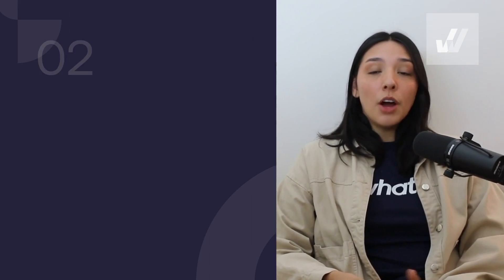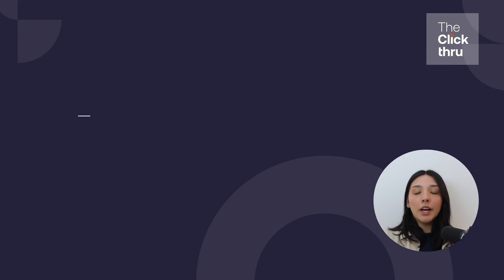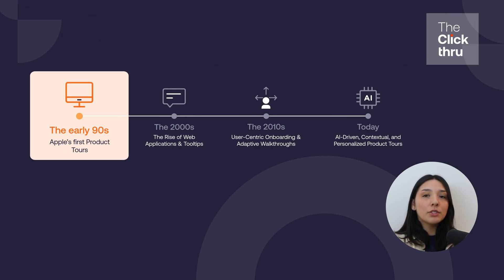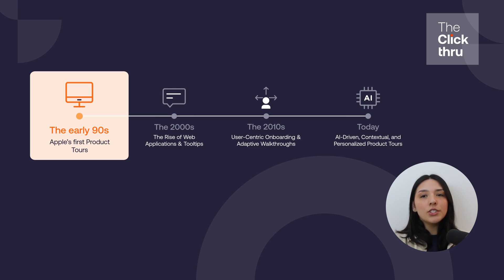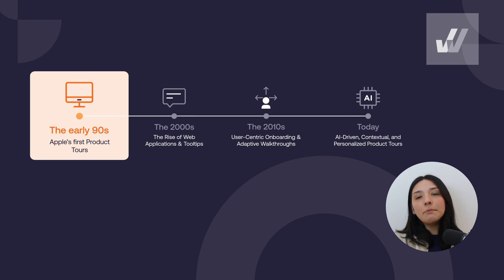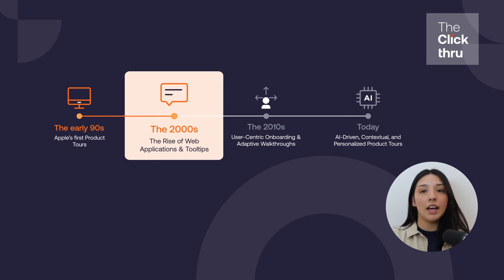Product tours have come a long way. What started as simple user manuals and onboarding wizards has evolved into personalized, interactive experiences that drive product adoption. One of the earliest product tours dates back to the early 1990s, when Apple introduced an interactive walkthrough to help users navigate Macintosh computers. These early product tours were simple but groundbreaking — they provided step-by-step guidance for users right inside the product, rather than relying on external manuals or help docs.